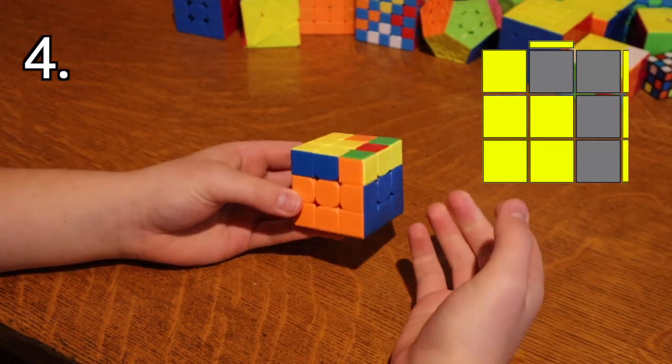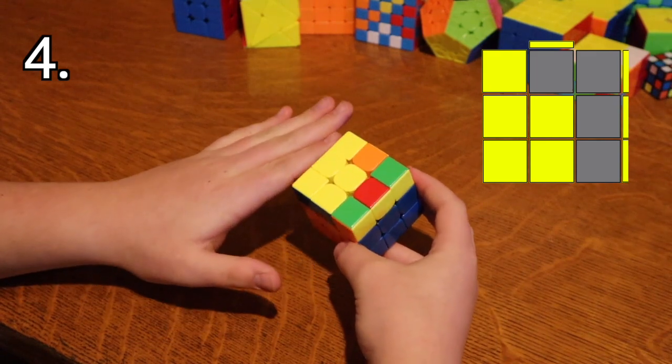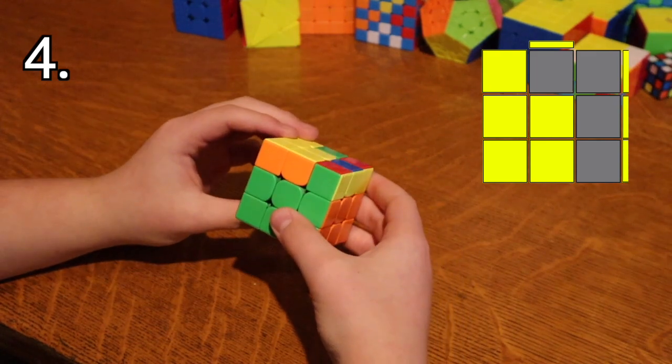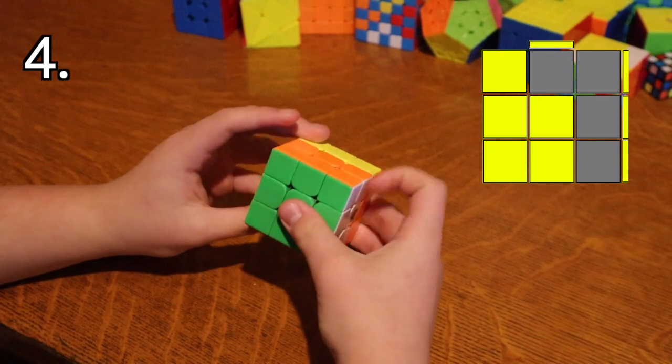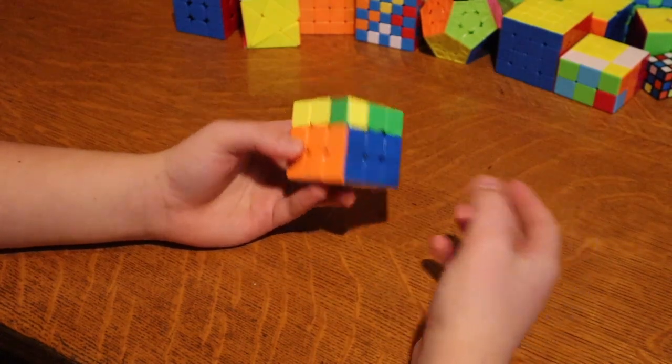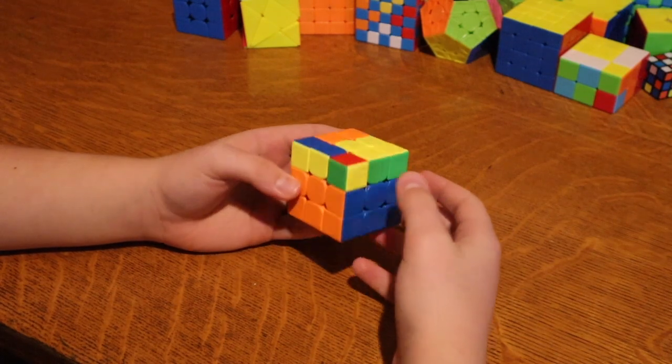This next one is the same thing that we saw two times ago, but it's on the left side. So you just have to use your left hand to do the algorithm like this. And there you go. So far for all these cases, you should know them if you know two look OLL.